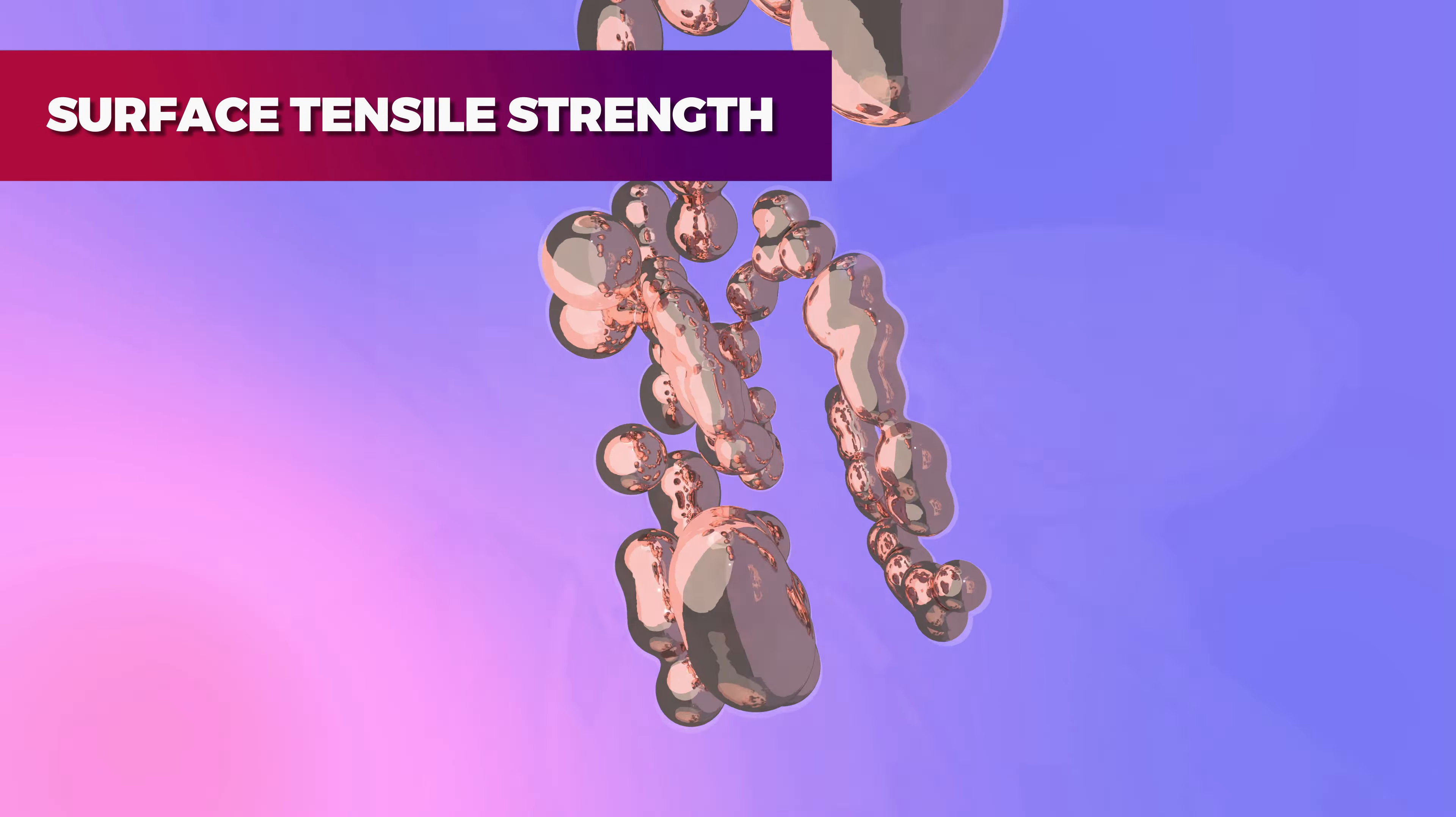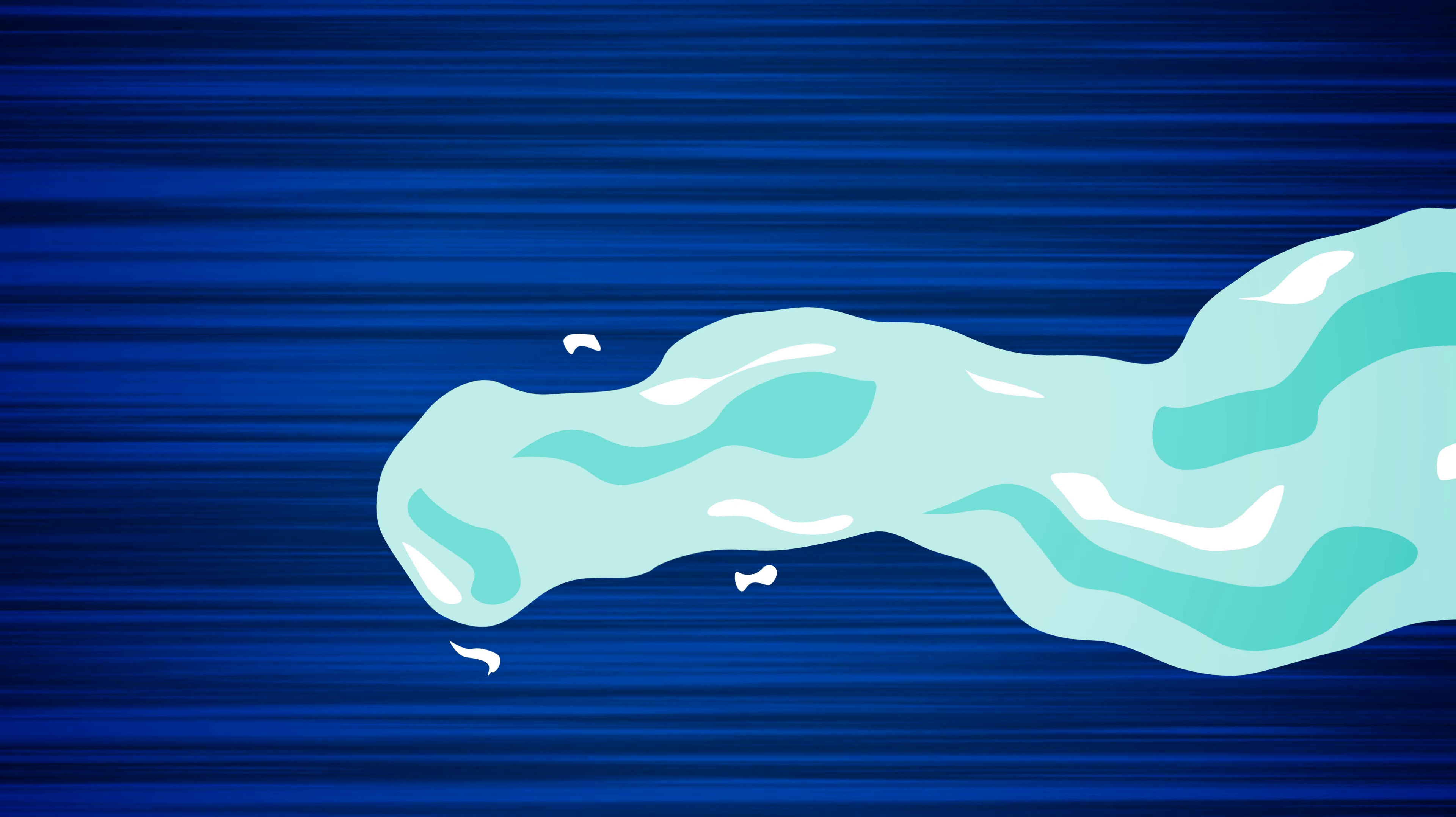Number four: Surface tensile strength. Another important difference between the two oceans' water is the strength of molecular connection or surface tensile strength. Thanks to this strength, molecules of matter hold to each other. The two oceans have a totally different surface tensile strength and it also doesn't let them mix.